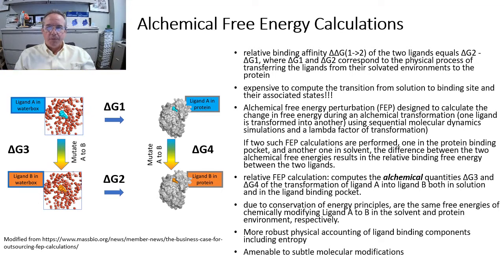These two values are very expensive to compute. Instead, in relative free energy calculations, one computes the more easily computed alchemical quantities ΔG3 and ΔG4, which are the free energies of chemically transforming ligand A into ligand B in the solvent and protein environments, respectively. From the diagram, the relative binding free energy — ΔG2 minus ΔG1 — is actually equal to ΔG4 minus ΔG3 by conservation of energy around this circuit.